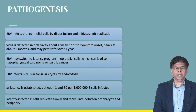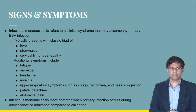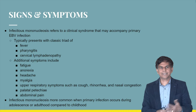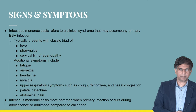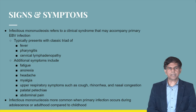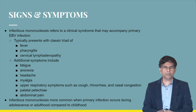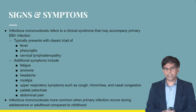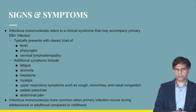Most people may remain asymptomatic. The classic triad of symptoms is fever, pharyngitis, and cervical lymphadenopathy. Additional symptoms include fatigue, anorexia, headache, myalgia, upper respiratory symptoms, palatal petechiae, and abdominal pain. EBV accounts for around 0.5% to 2% of malignancies, and can cause post-transplant lymphoproliferative disease, Burkitt lymphoma, Hodgkin's lymphoma, nasopharyngeal carcinoma, and gastric carcinoma. Burkitt lymphoma is very closely associated with EBV.